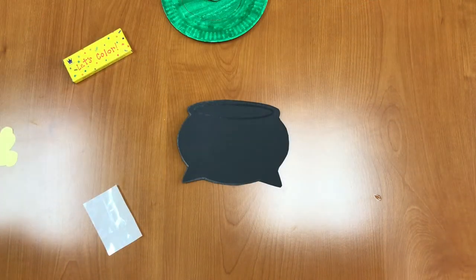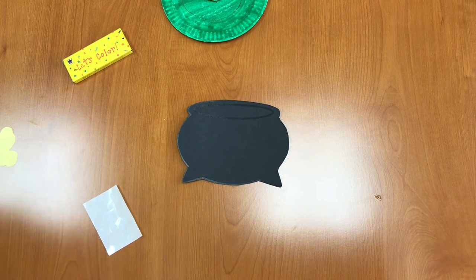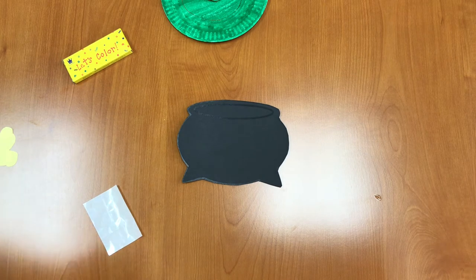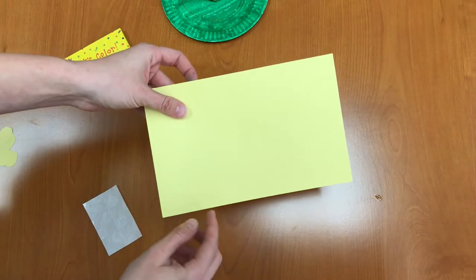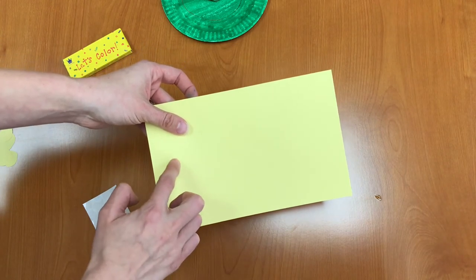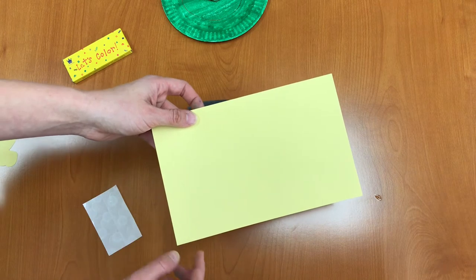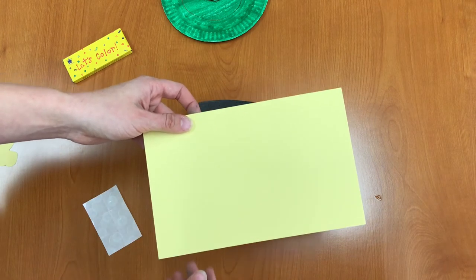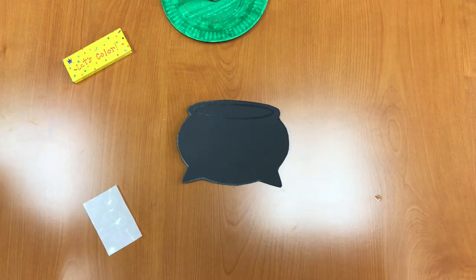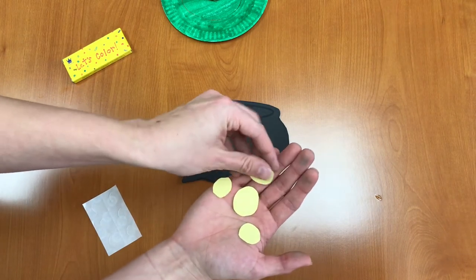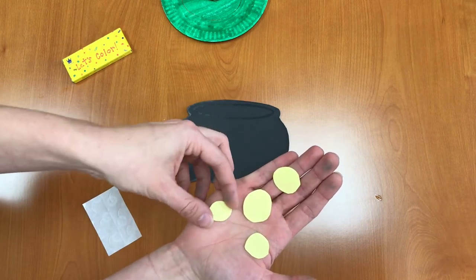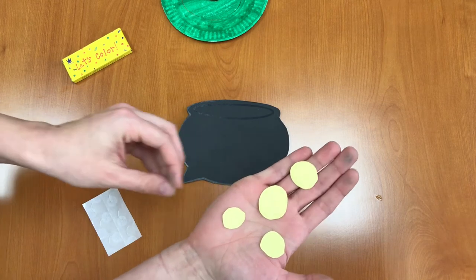All right, now I have my cauldron cut out and next we need to cut out some gold pieces to put into our cauldron. So we're going to take the yellow piece of paper and we're just going to cut little circles out. You can choose to trace them with a bottle cap or a small circular object or you can just freehand cut them. I went ahead and cut these out and they're not perfect circles but that's okay because they're going to be just chunks of gold.